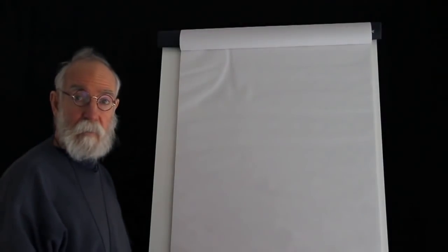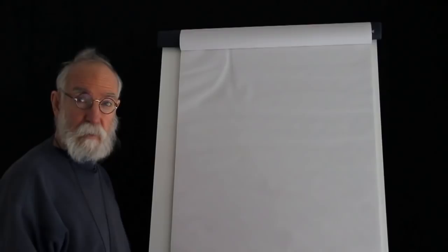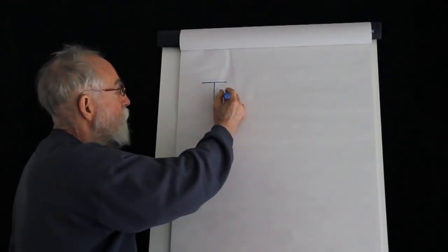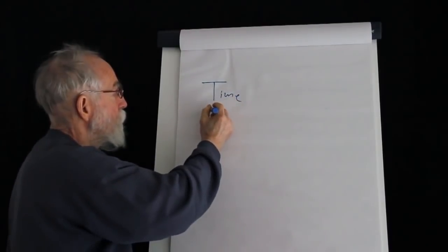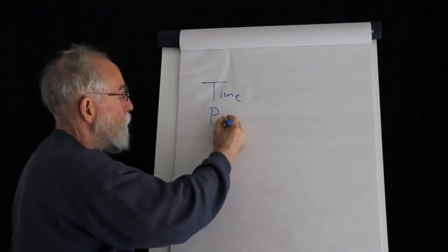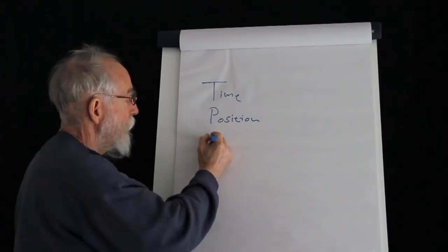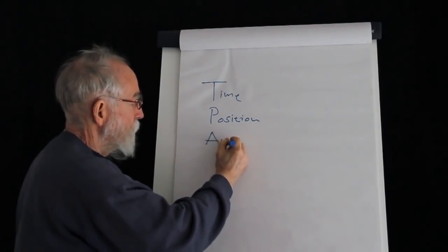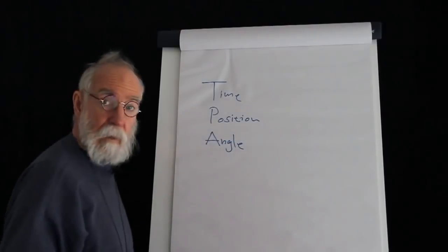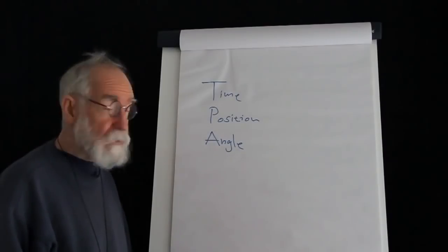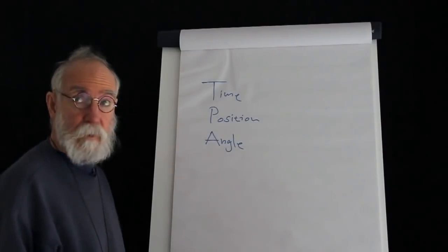There is a mathematical relationship between time, position, and angle. If you know two, you can calculate the third. To calibrate the instrument, you proceed as follows.